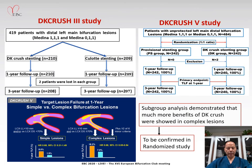Also, previously we published the DK-Crush 3 and DK-Crush 5 studies comparing DK-Crush with culotte stenting technique or provisional stenting technique for distal left main bifurcation lesions stratified by Medina 111 or Medina 011. Subgroup analysis demonstrated that much greater benefits of DK-Crush were shown in complex lesions. However, this finding needed to be confirmed in a randomized study.